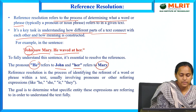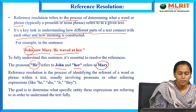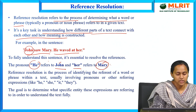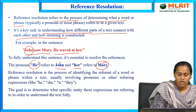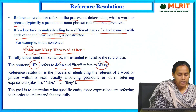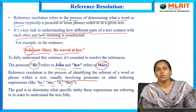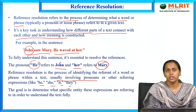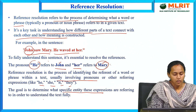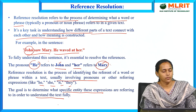To fully understand the sentences: John is referred to as 'he' and Mary is referred to as 'her.' In reference resolution, we identify different words within a text, usually involving pronouns like he, she, it, and they. The goal is to determine the specific entity in order to understand the text fully.